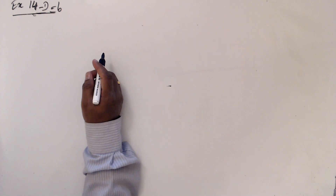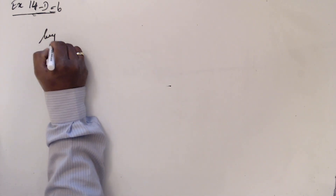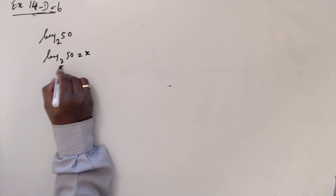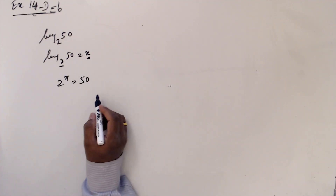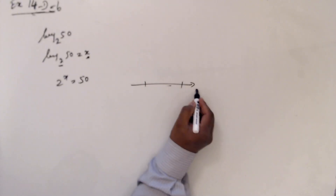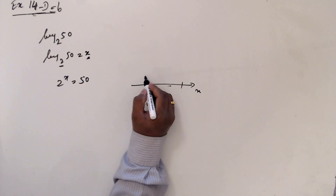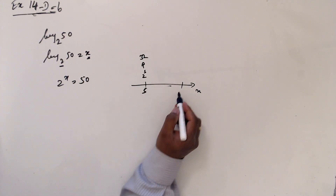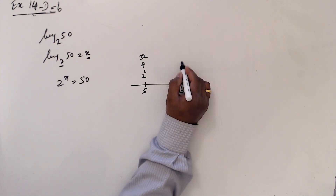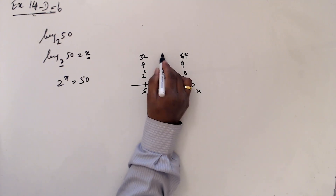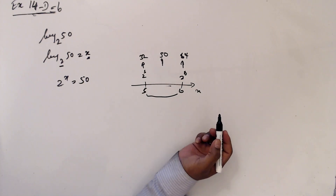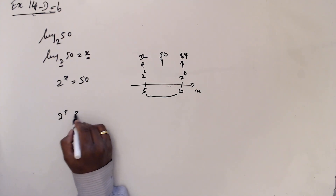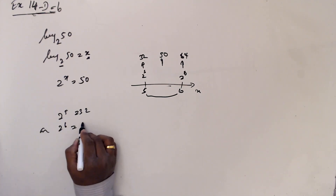Number 6: without using a calculator, justify the value of log base 2 of 50 between 5 and 6. Log base 2 of 50 — let's take x. This is the base, this is the power value: log base 2 of x equals 50. Let's take the number line. If x value is 5, what is 2 to the power 5? 2 to the power 5 is 32. And what if x value is 6? 2 to the power 6 is 64.